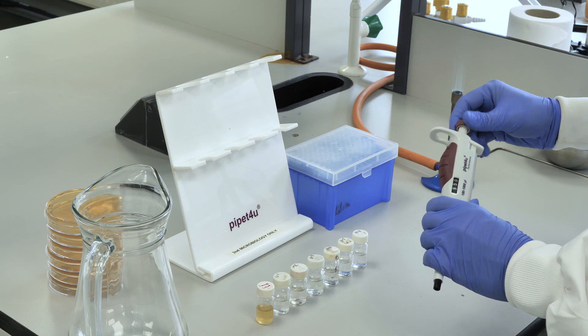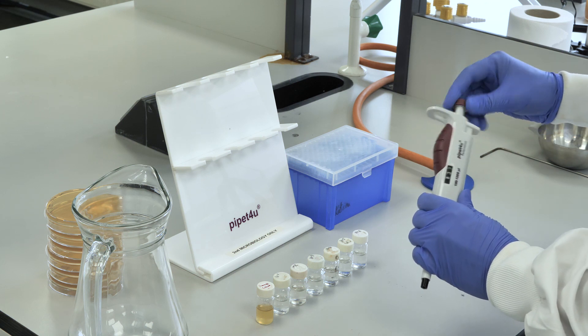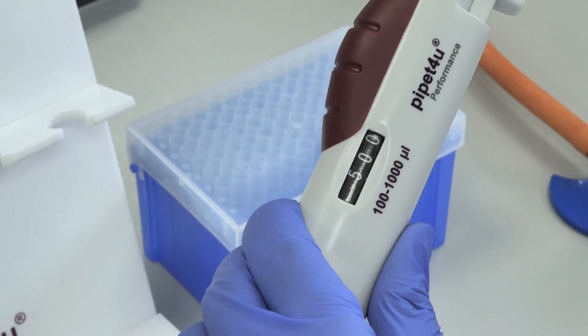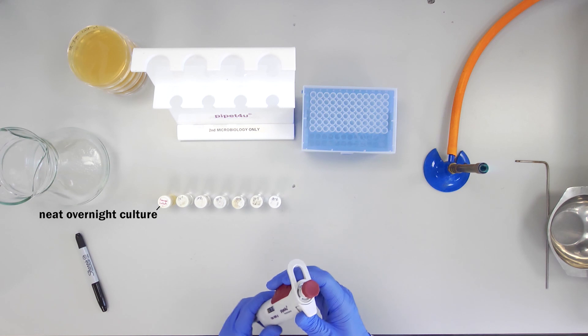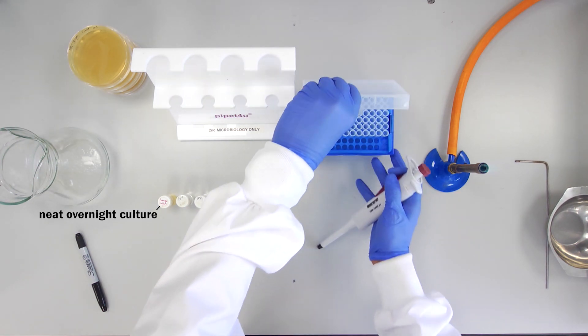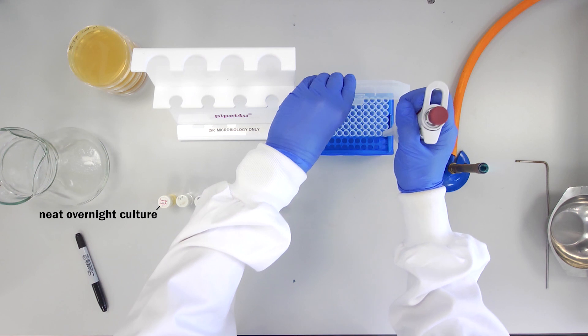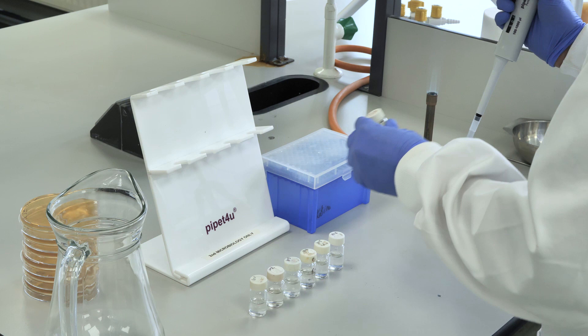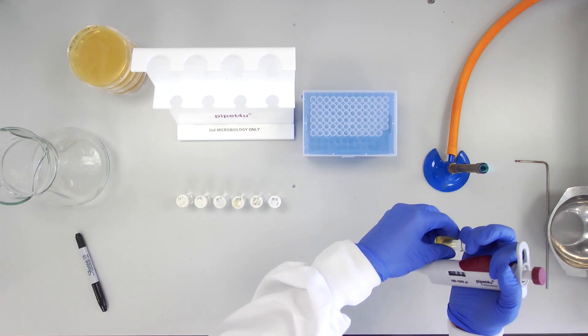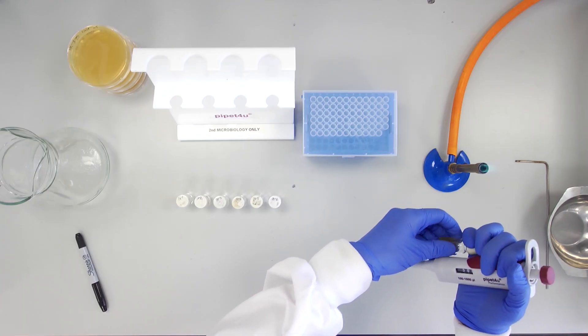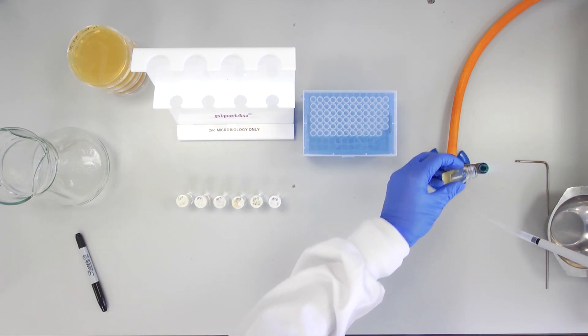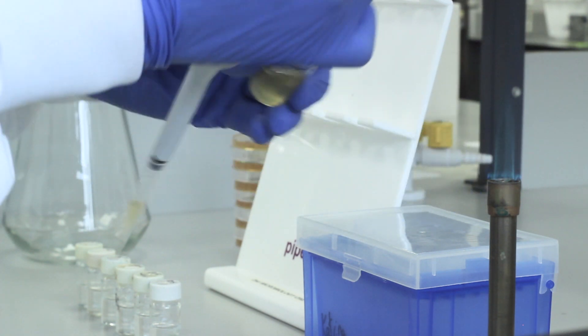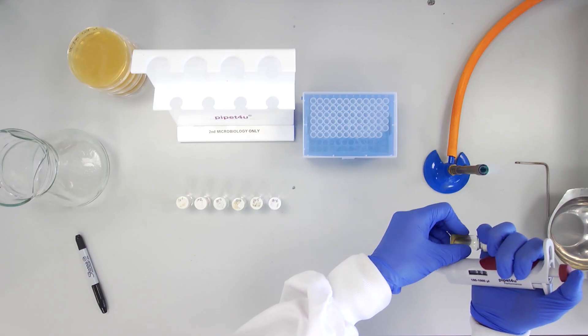Using a pipette with a fresh tip attached, remove 500 µl of the overnight culture. Take the overnight culture, mix the culture suspension well, flaming the open neck of the bijoux before and after removing the liquid. Note that the tip box is only open while the tip is being removed.